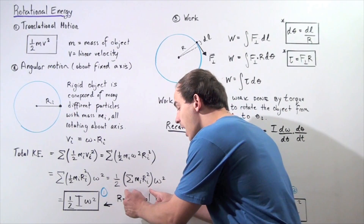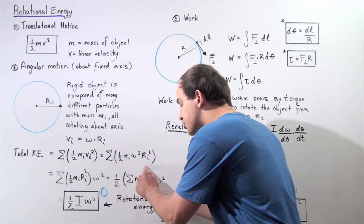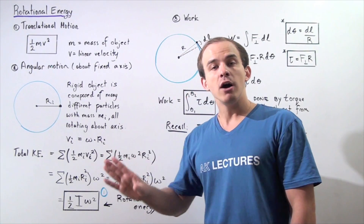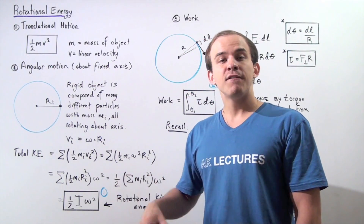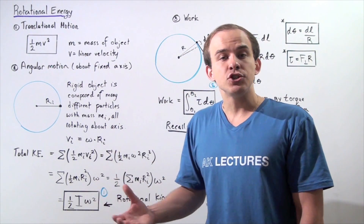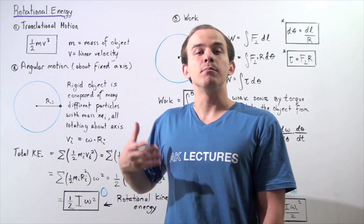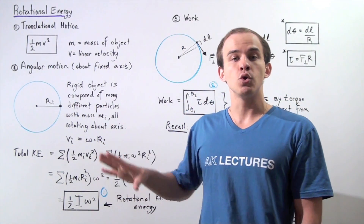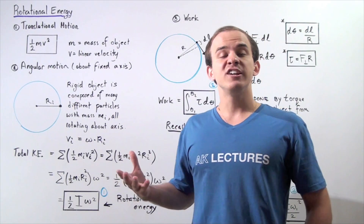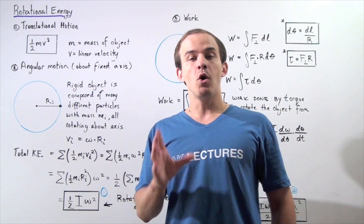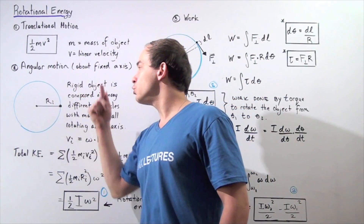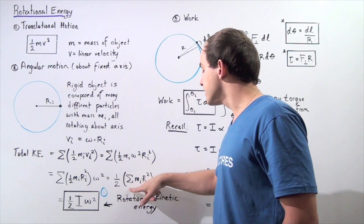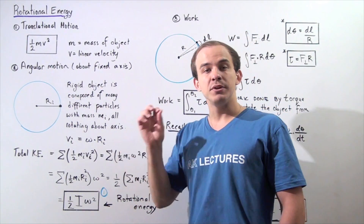So I have one-half multiplied by the sum, multiplied by omega squared. Notice that this sum — mi ri squared — is simply the rotational inertia of each particle. And if I sum up all the rotational inertias of all the individual particles, that gives me the entire moment of inertia of my two-dimensional object. So I can replace this entire term with simply I.